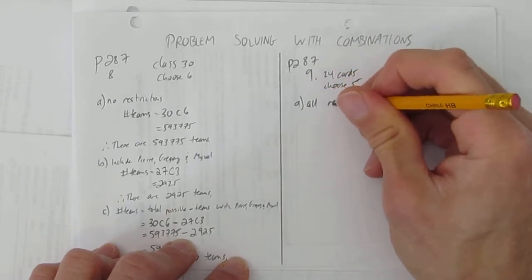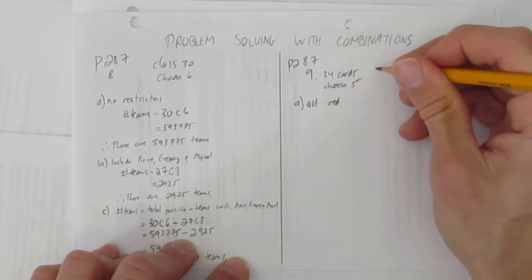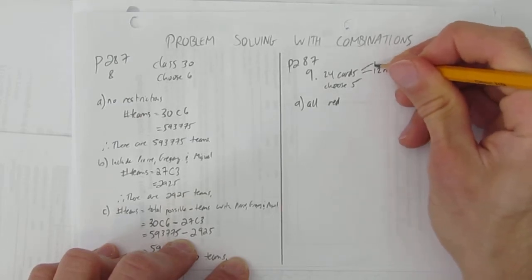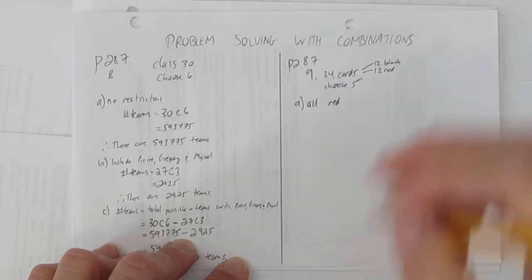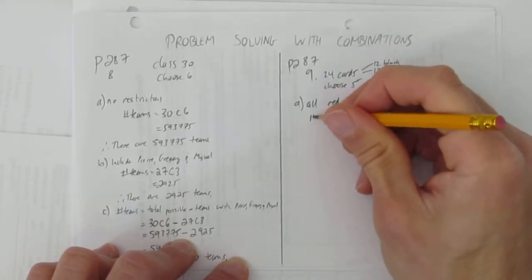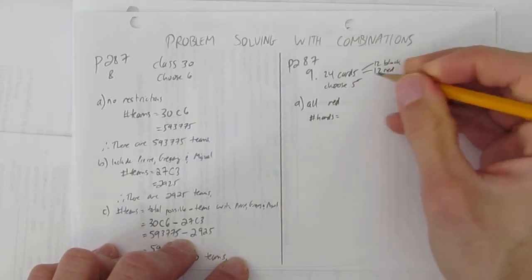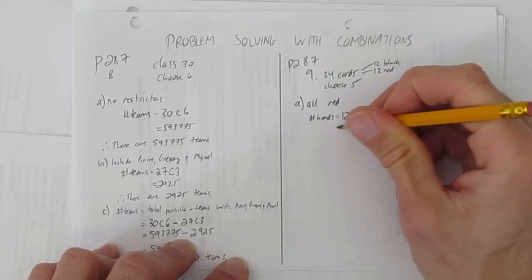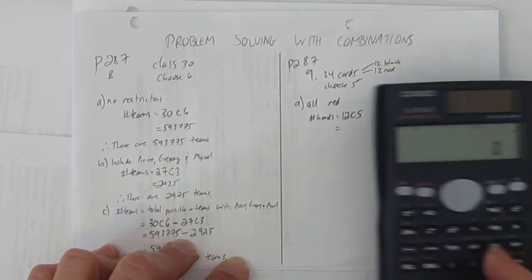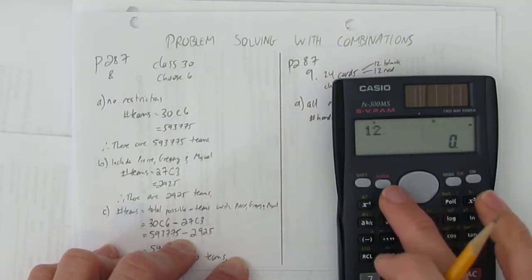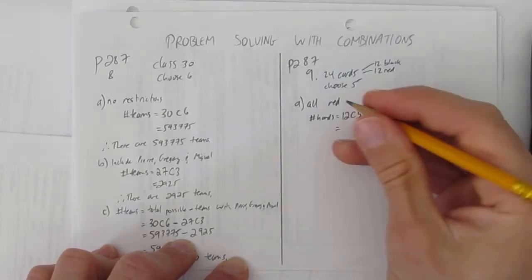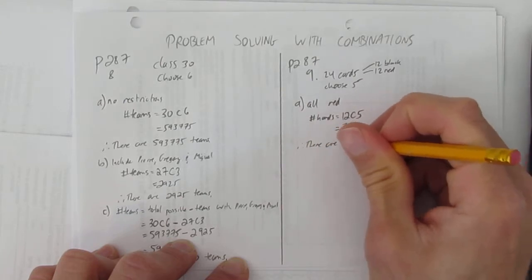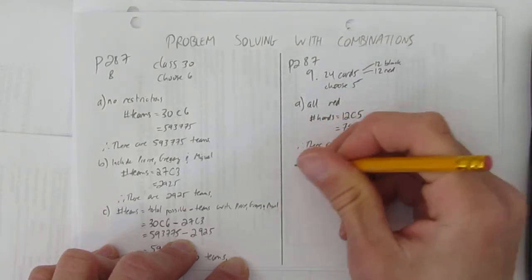It helps if you know cards here, but of these 24 cards, 12 of them are going to be red and 12 of them are going to be black. So if you have to choose five and they're all red, then the number of hands that are all red means from these 12 red cards, you have to choose all five. So what's 12 choose five? 792. So there are 792 hands given the restriction of all red.